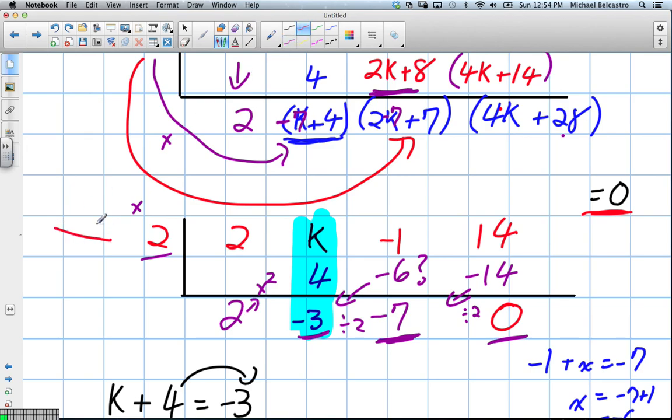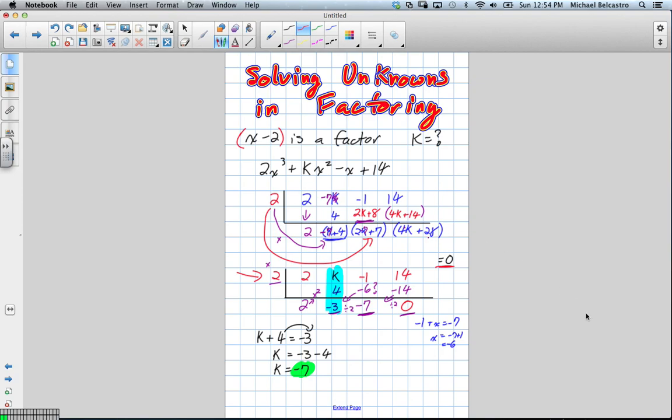This is the part you really have to focus on, is just doing that without the check. Does that make sense? Going backwards. So the key was to know what the remainder was. And because they said it was a factor, the remainder had to be 0. If they said there was a remainder of 9, then we would have put 9 in at the last turn doing synthetic division.